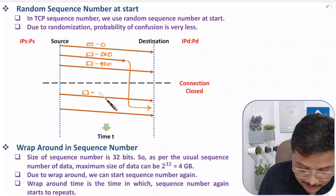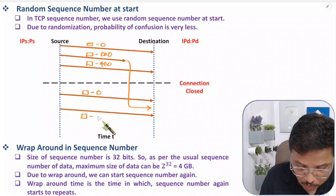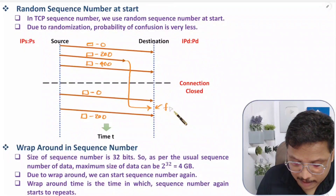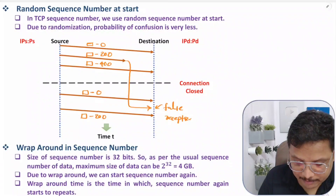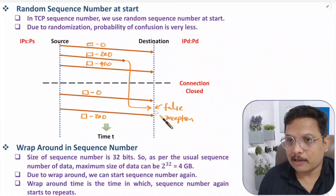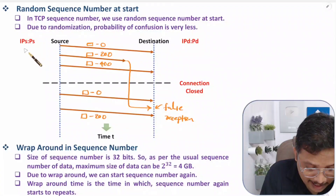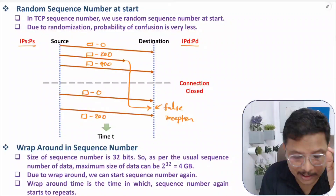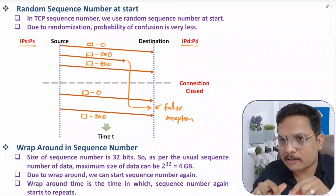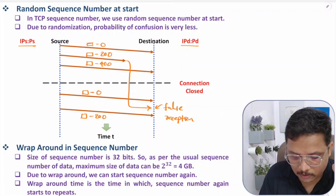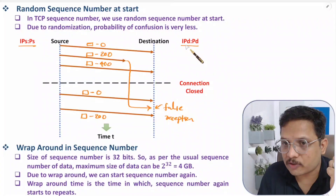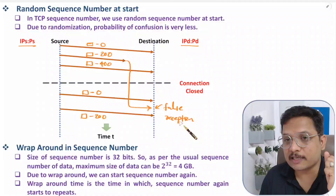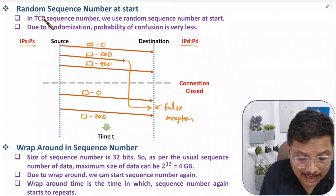If a new connection starts again with sequence number 0, and the delayed old frame with sequence number 200 arrives, there can be false reception — the receiver may accept that old frame as part of the new connection. This happens because the IP socket — IP address plus port — does not change with source and destination across connections. For web browser, port number remains the same. So after connection close, receiving a delayed old frame causes false reception.